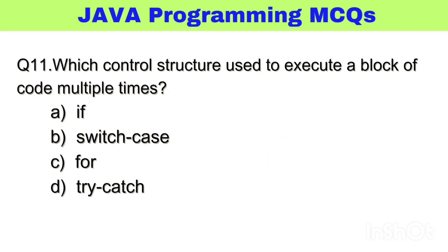Question number 11. Which control structure is used to execute a block of code multiple times? The right answer, option C: for loop.